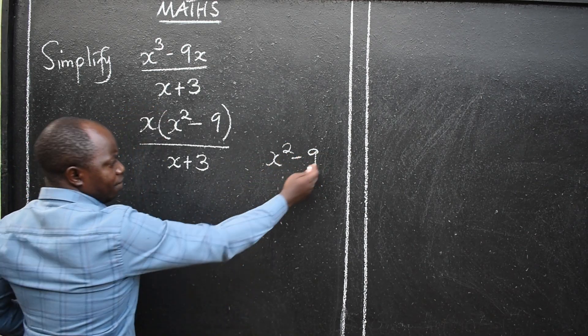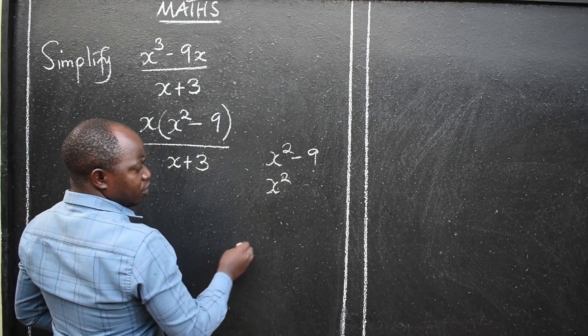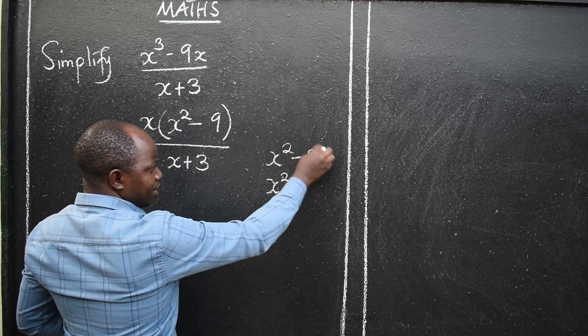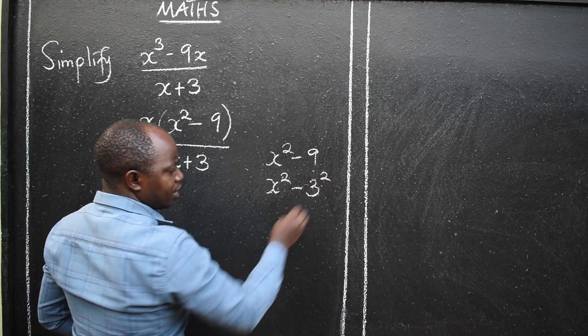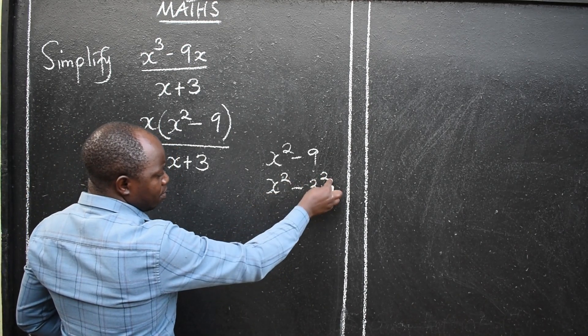When I factorize this, I am going to get x squared minus this 9 will be written 3 squared. So that I have everything in square form.